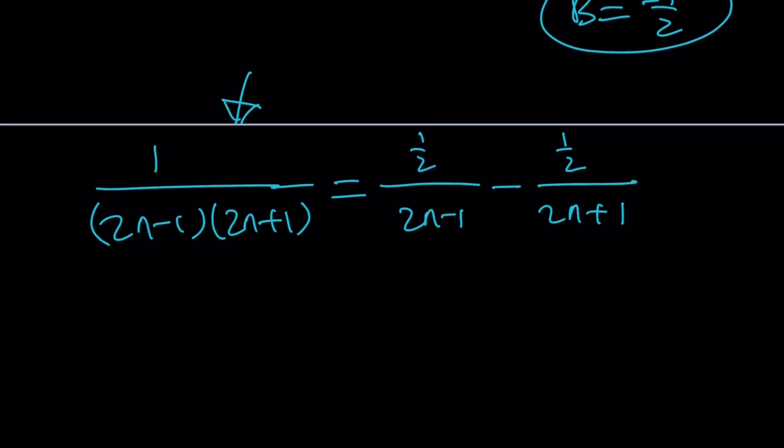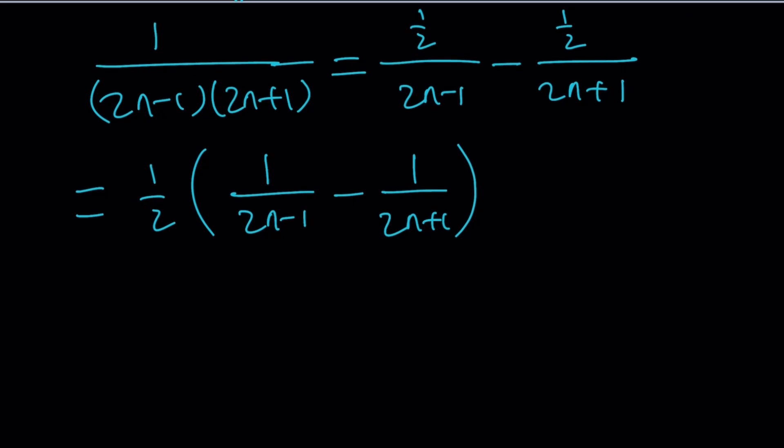Now, since there is 1 half in the numerator, and it kind of looks awkward, let's go ahead and put it in the front and write this as 1 half on the outside, and 1 over 2n minus 1, minus 1 over 2n plus 1. And at this point, you can actually go ahead and use the sigma notation, because this is a general term, but n is going to go from 1 to infinity. So you can write it like this.